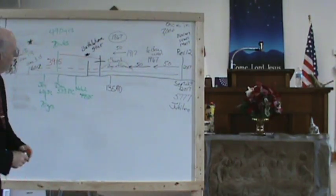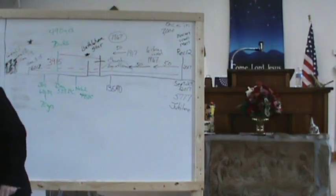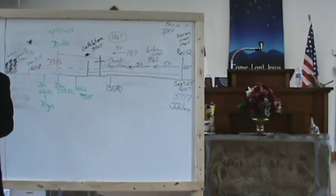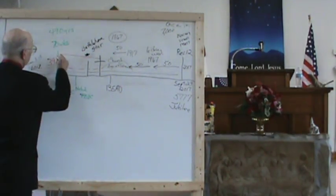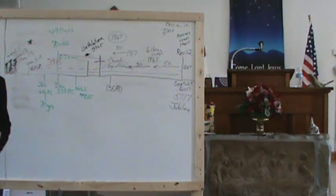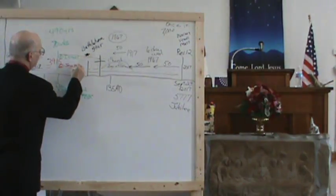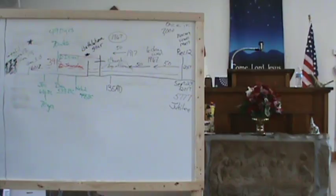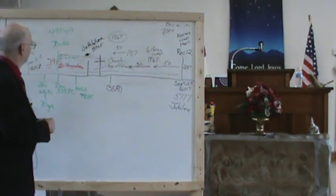Now in Daniel chapter 9 and verse 24, notice two things that the 70 weeks are determined upon. Thy people, that's number one, which is the nation of Israel. And that'd be number two, the holy city, Jerusalem. Now this is really where it gets interesting. If I put you to sleep up to here, I want you to understand what's taking place here.